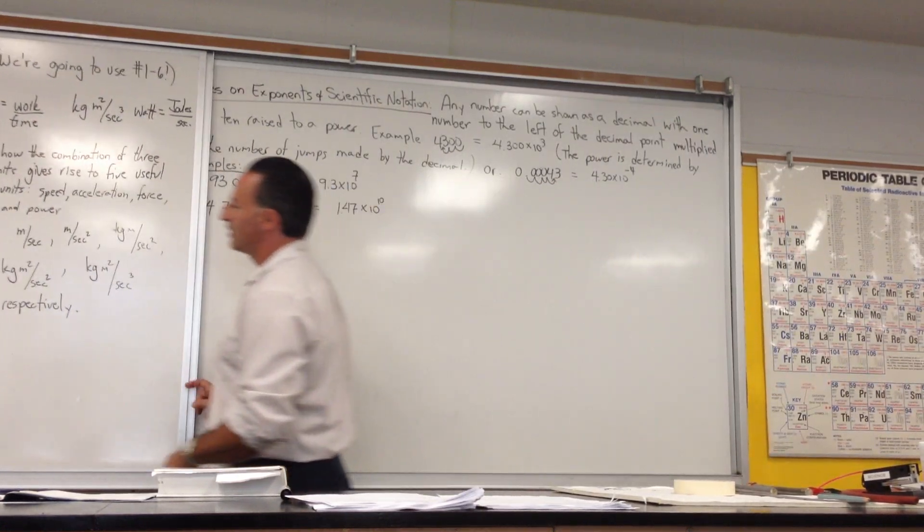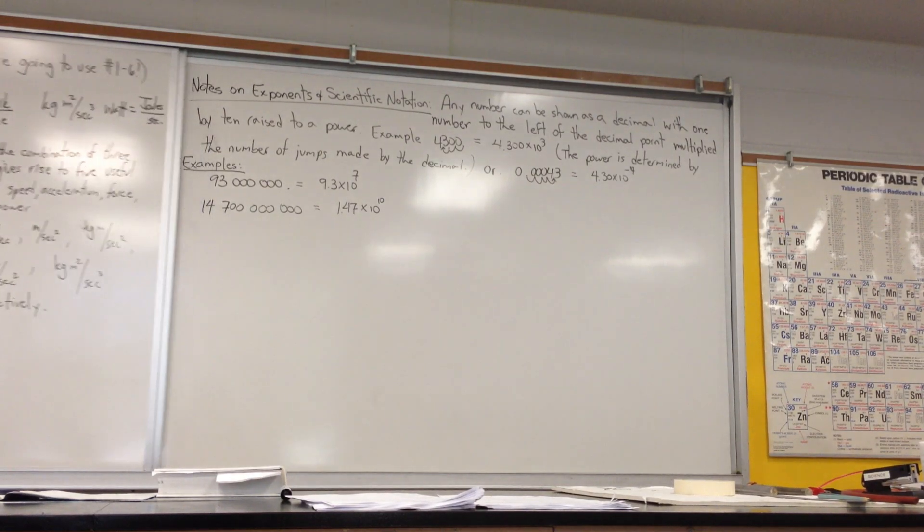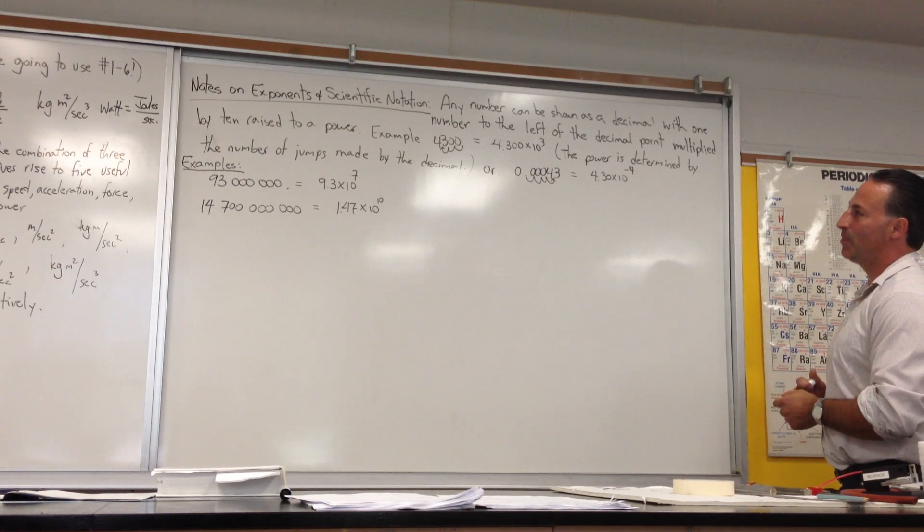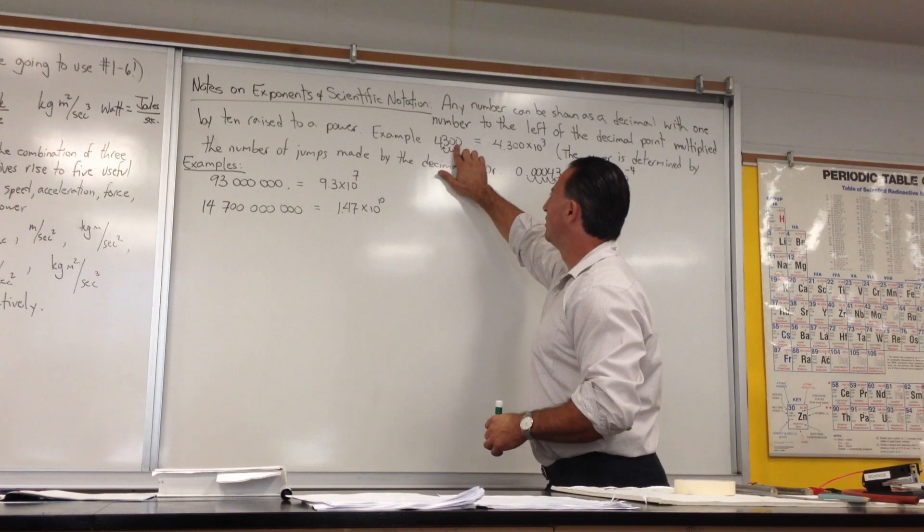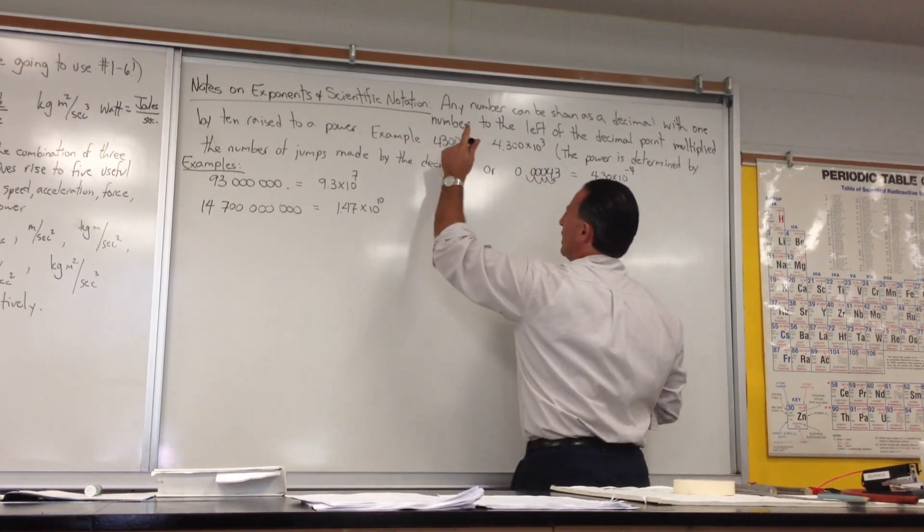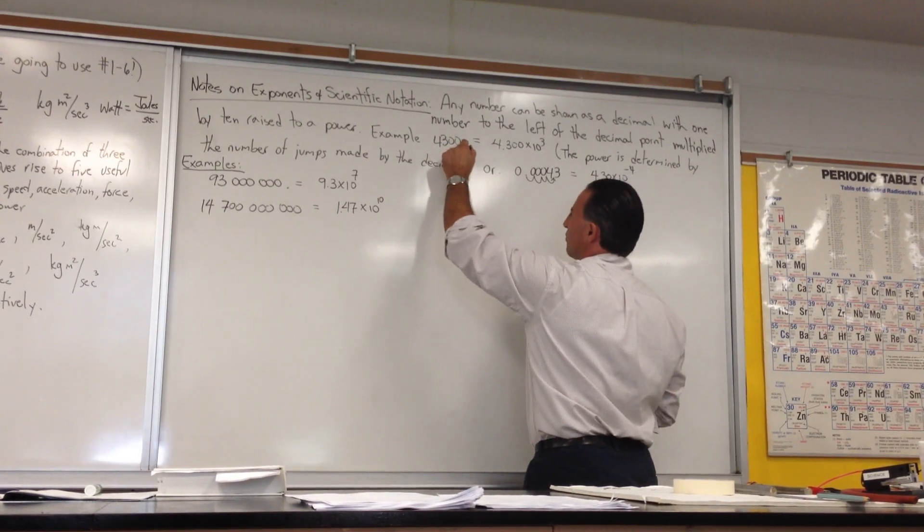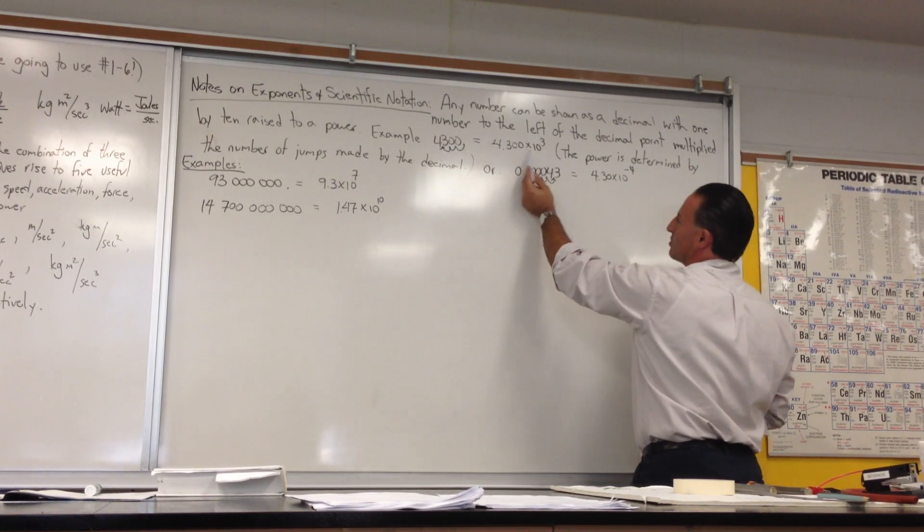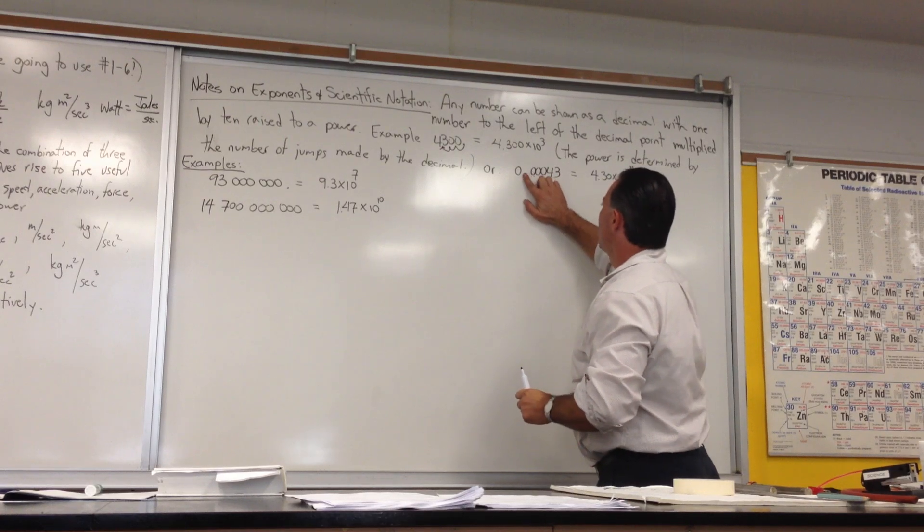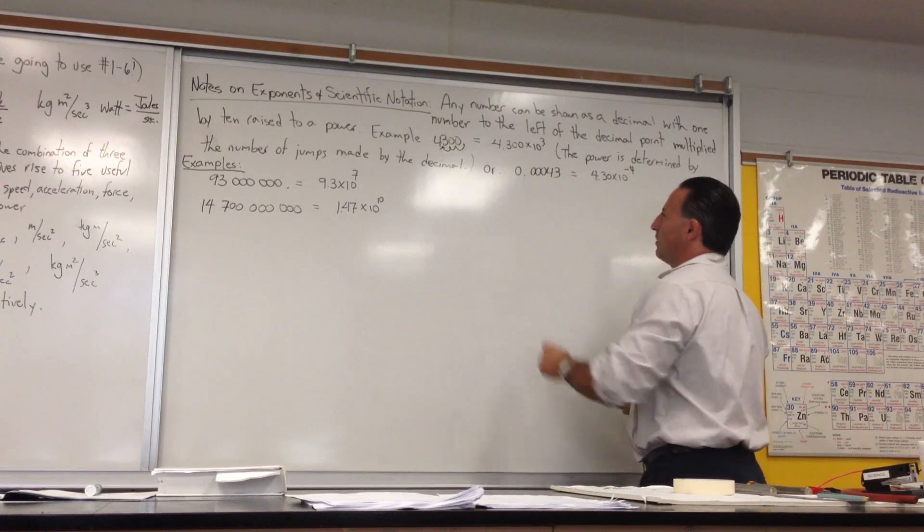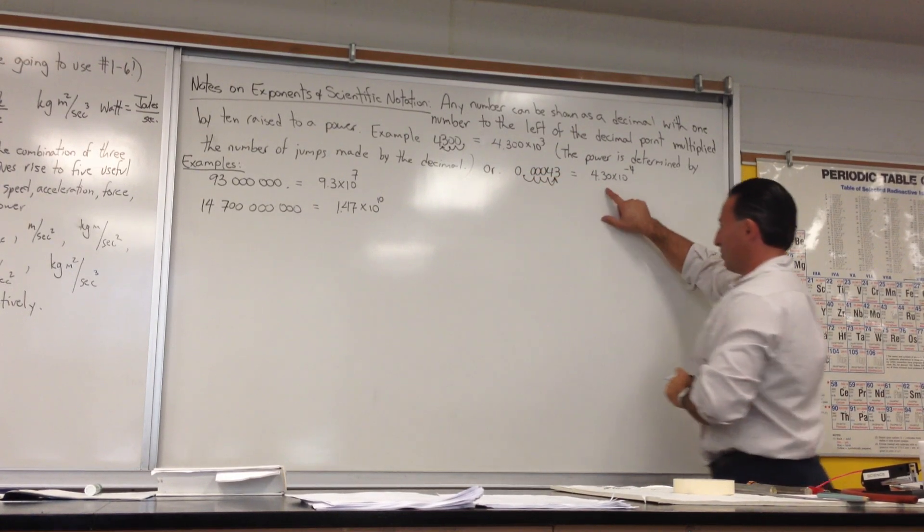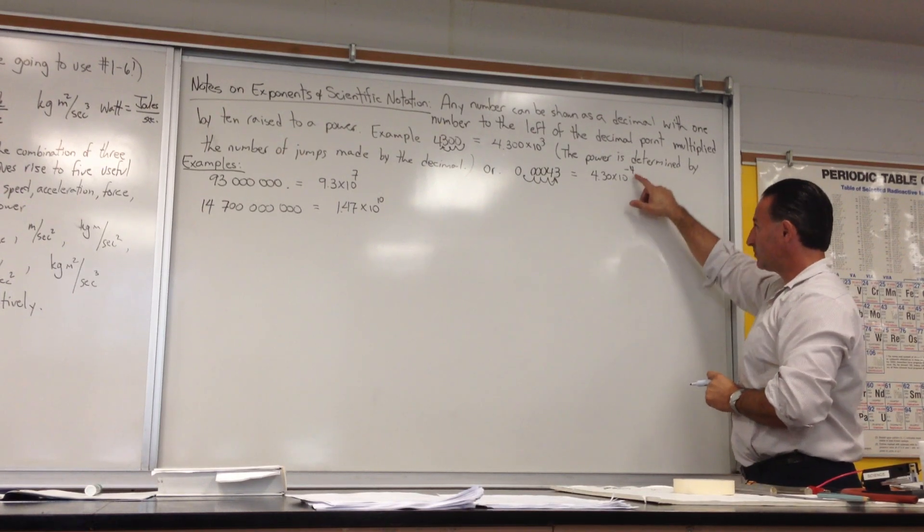Now we're going to try a little bit about scientific notation. It's just a little bit of review. Any number can be shown as a decimal with one number to the left of the decimal point multiplied by 10 raised to a power. For example, the number 4300 has a decimal place right here. But if we count that decimal place over one, two, three times, we can rewrite it as 4.300 times 10 to the 3. The power is determined by the number of jumps made by the decimal. Or suppose you had 0.00043. Instead of writing it that way, you could count how many times you'd have to jump to get to the decimal place right here. So you'd say 1, 2, 3, 4. That equals 4.300 times 10 to the minus 4. Notice because you've moved to the right, the power gets smaller.